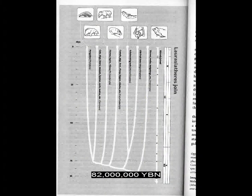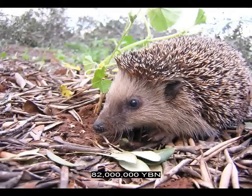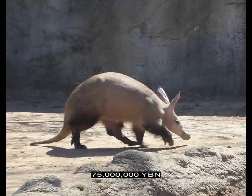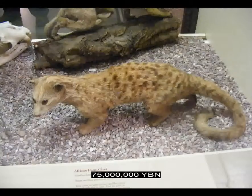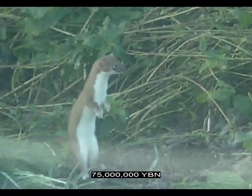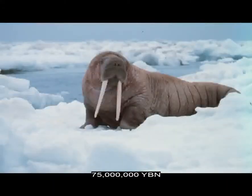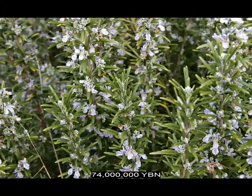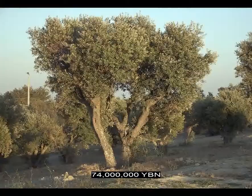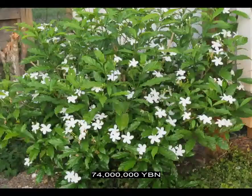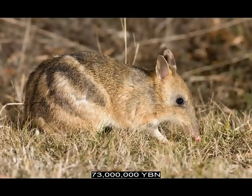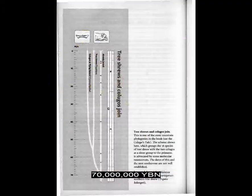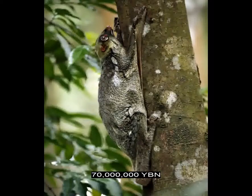Laurasiatheria Insectivora evolves — shrews, moles, hedgehogs. Marsupials, new world opossums. Afrotheria aardvark. Laurasiatheria Carnivora — cats, dogs, bears, weasels, hyenas, seals, walruses. Flowers Lamiales — mint, basil, oregano, rosemary, sage, thyme, sesame, olive, ash, lilac, jasmine. Marsupials bandicoots and bilbies. Placental mammals: rabbits, hares, and pikas. Placental mammals: tree shrews and colugos.